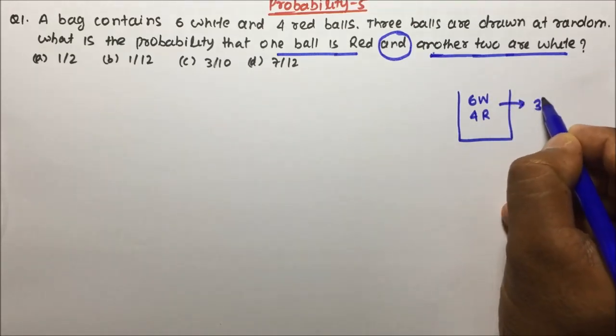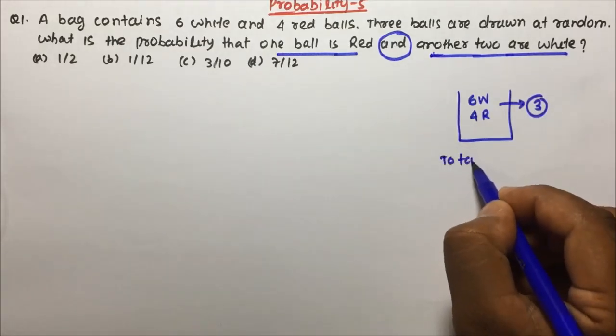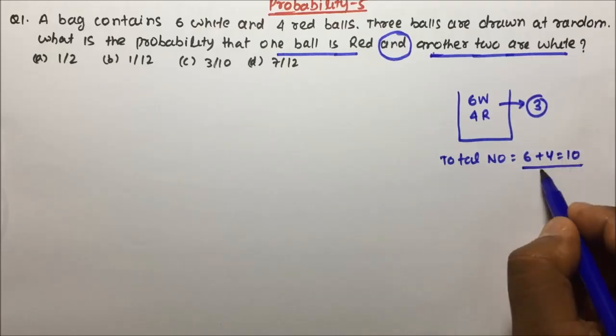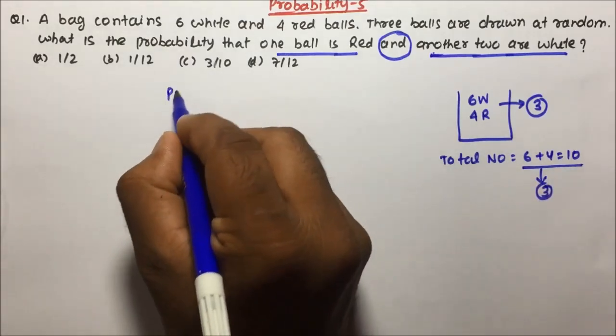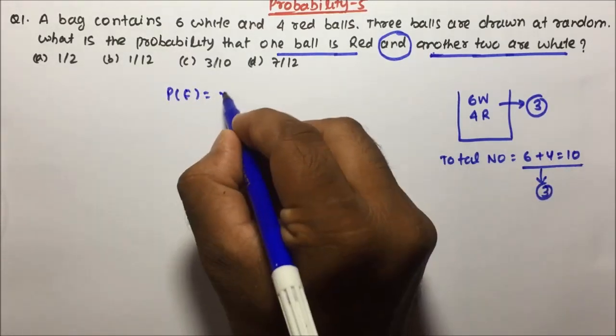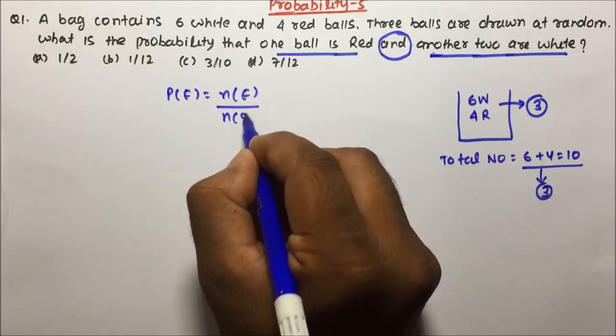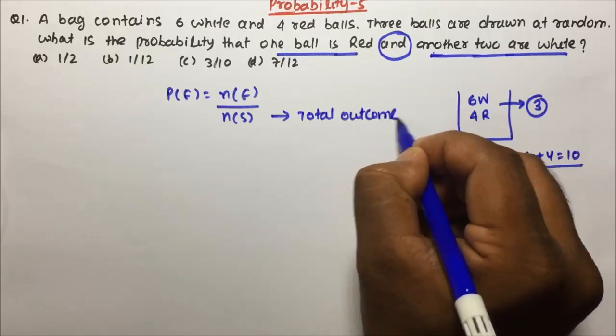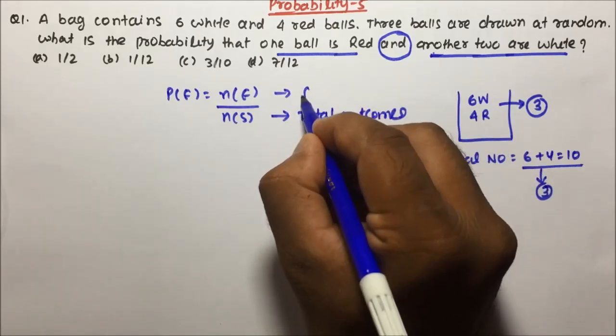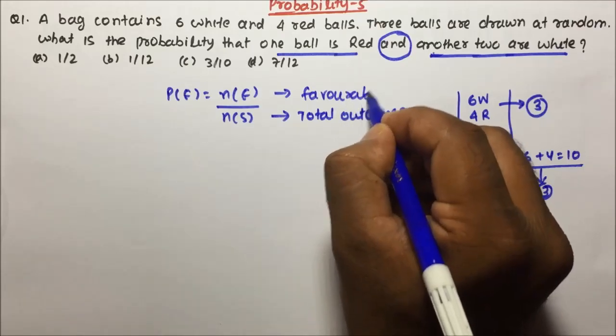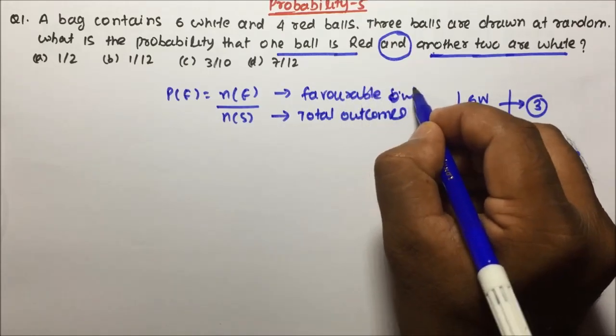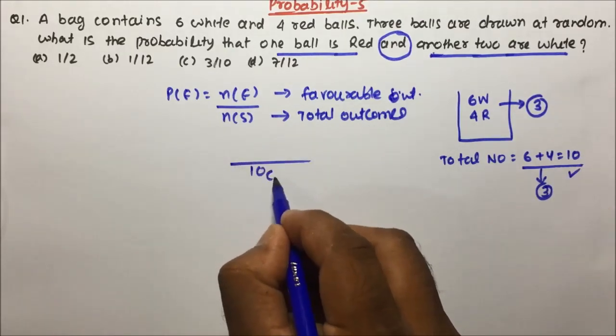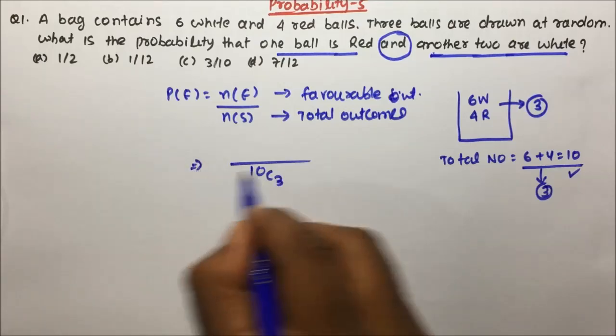How many total balls have been drawn? 3. Total number of balls will be 6 plus 4, which is nothing but 10 balls, and we are going to draw 3 out of that. My probability will be equal to Ne divided by Ns, standard formula where Ns will be total outcomes and Ne will be favorable outcomes. So total number of balls is 10, and we are going to select 3 balls out of that.